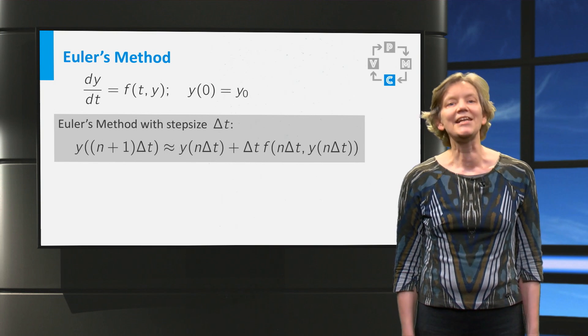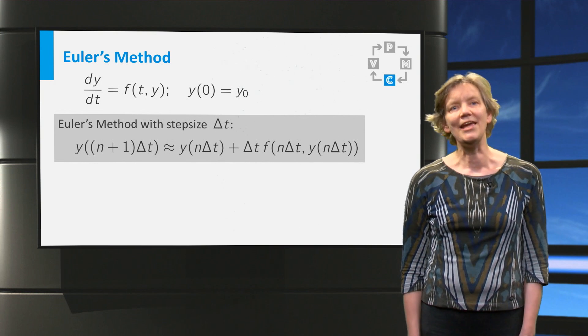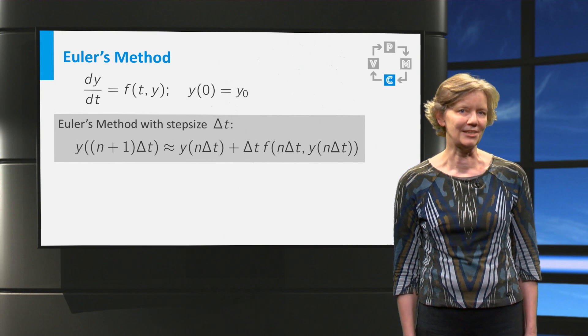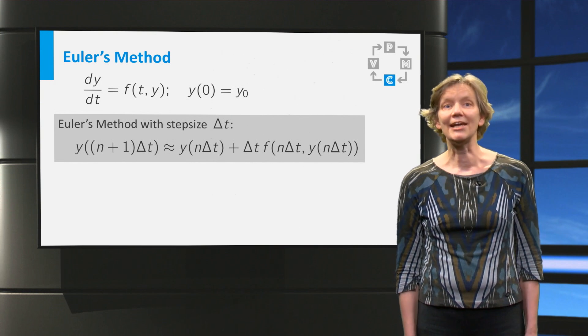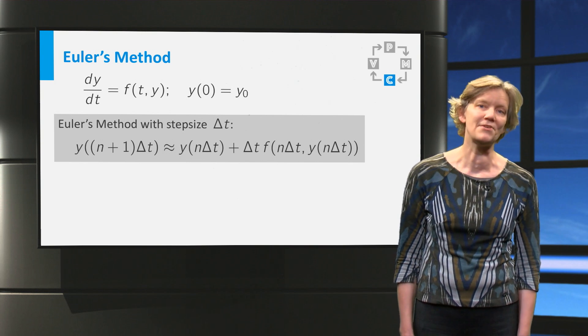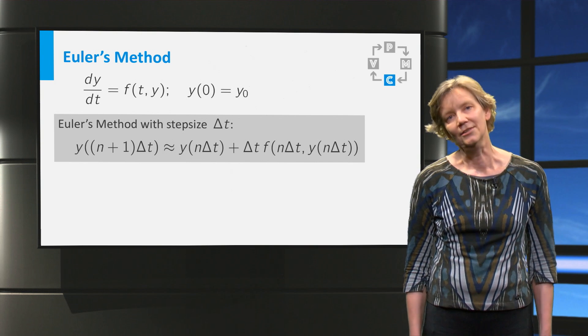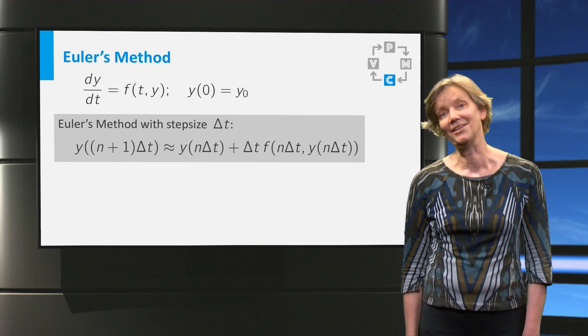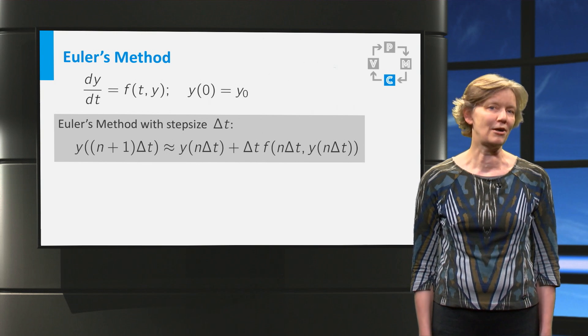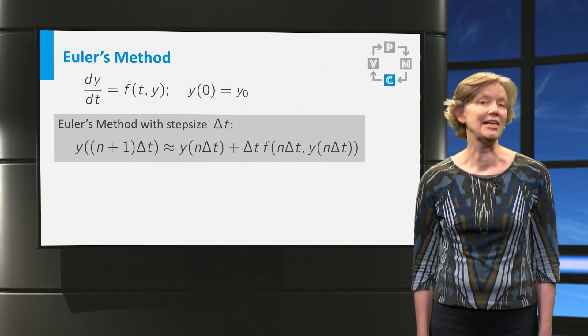We start with the initial condition and use the formula for n equal to 0 to approximate the value of y at time delta t. Then we can use the same formula for n equal to 1 to approximate the value of y at time 2 times delta t. And so on, until we have covered the time span that we are interested in.